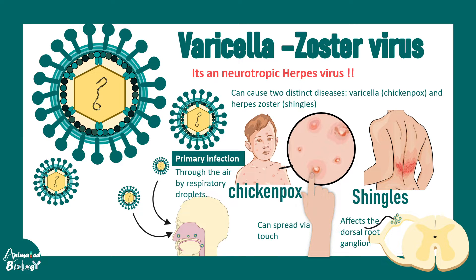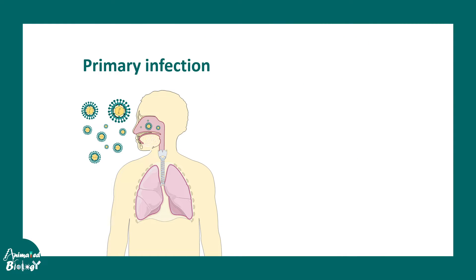It is a droplet infection, or it can also spread via touching the infected person, causing itchy, painful, reddish rashes all over the body. The primary infection happens via respiratory droplets — coughing and sneezing are the prime ways by which it can be transferred. It infects the respiratory epithelial cells and eventually moves to the lungs, affecting the alveolar cells.